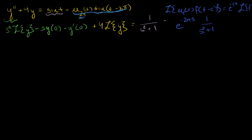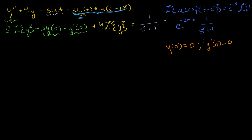Going back to our equation: we've taken the Laplace transform of both sides. The initial conditions are y(0) = 0 and y'(0) = 0. That makes the math easy — both of those terms drop out. So we factor the left-hand side: the Laplace transform of y times (s² + 4) equals the right-hand side.